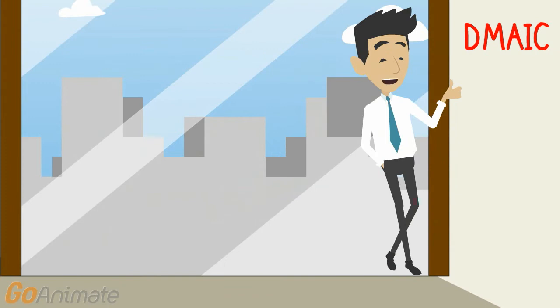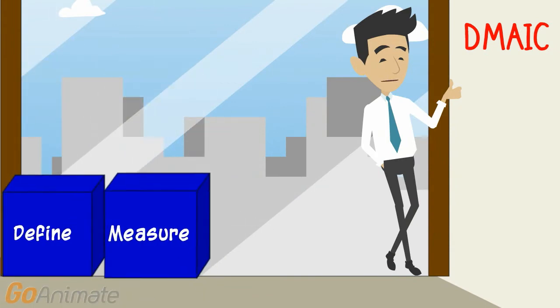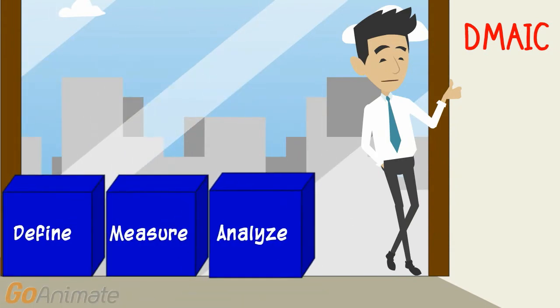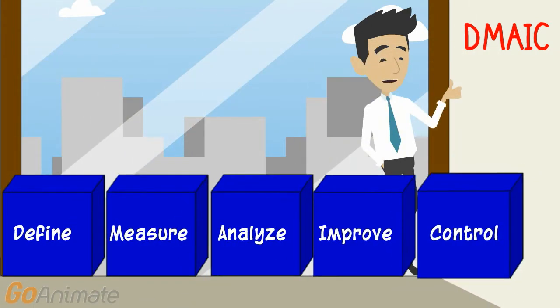DMAIC stands for Define, Measure, Analyze, Improve, and Control.